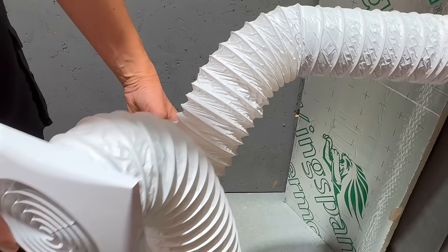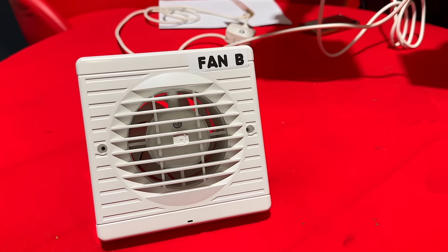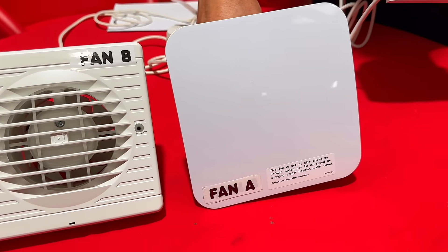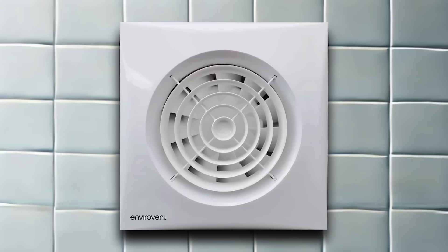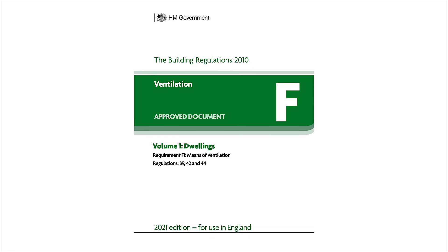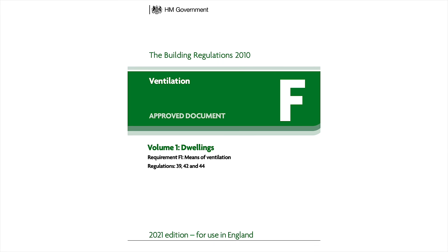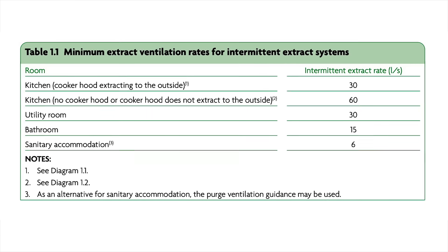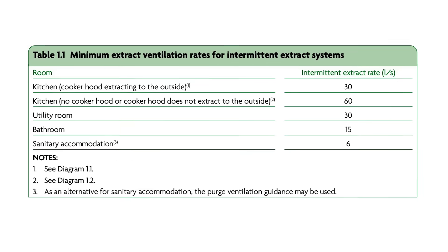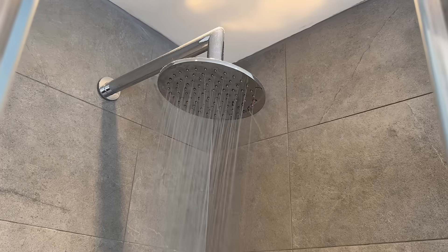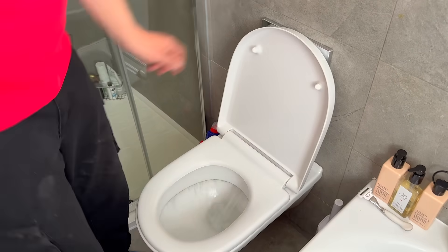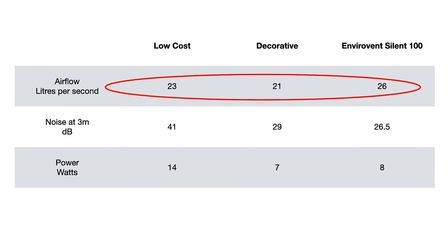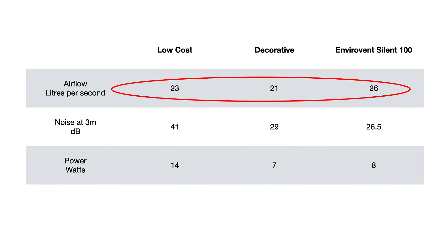To illustrate our selection, we have chosen a variety of fans, including a low price option, a decorative model, and one from a premium brand. For many installers, a good starting point is to choose a fan that enables compliance with building regulations, which typically specify minimum extract values in litres per second. We'll look at the intermittent extract performance — when you need to remove steam after taking a bath or shower, or remove odours from a toilet. On paper, these fans all seem to offer comparable performance according to their respective data sheets.